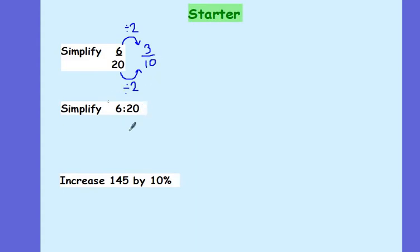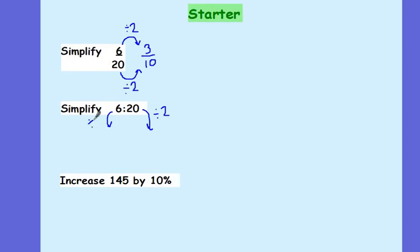To simplify a ratio, we do a very similar procedure. We need to divide both sides of my ratio by 2, which will leave me with 3 to 10.